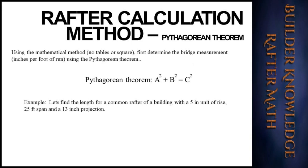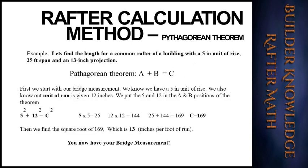Now let's see what you've learned using the mathematical method — no tables or squares. First, determine the bridge measurement in inches per foot of run using the Pythagorean theorem. For our example: find the length for a common rafter of a building with a 5-inch unit of rise, a 25-foot span, and a 13-inch projection. Remember: a² + b² = c². You can pause the video before the answer comes up. To obtain our bridge measurement, we start with our rise of 5 inches; our run is the given 12 inches. We put 5 and 12 into the theorem at the a and b positions.